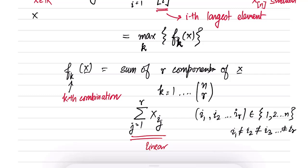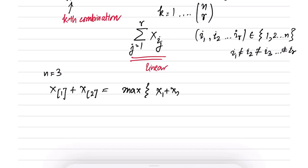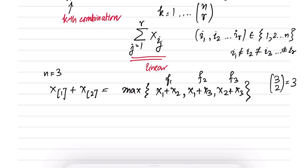For a concrete example, let n = 3 and r = 2. Then x_{[1]} + x_{[2]} equals the maximum of {x_1 + x_2, x_1 + x_3, x_2 + x_3}. No matter what x_1, x_2, x_3 are, the sum of the two largest components equals this maximum. There are three possibilities because C(3,2) = 3, and all three are linear functions, so this is a pointwise maximum of linear functions.